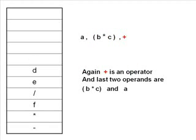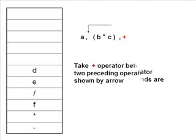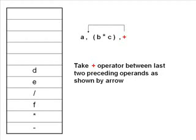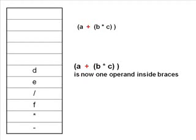We pop our next character from the expression. This is a plus symbol, which is an operator. We follow the same procedure — we push it between A and (B*C). So A+(B*C) is now a single operand.